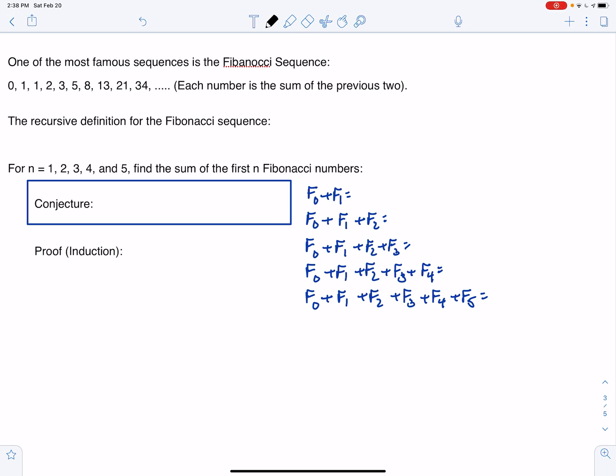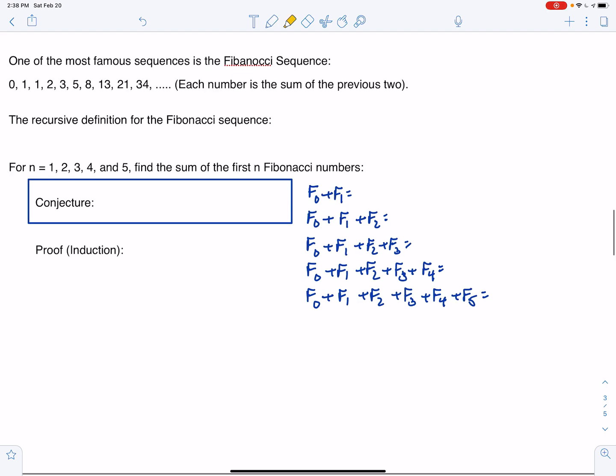All right, so one of the most popular sequences there is is called the Fibonacci sequence, which is basically built off of each term being the sum of the previous two terms. So just a quick look here. If I look at the first two terms of the sequence, the next term is one. And then if I look at one and one, we get two and so on and so on.